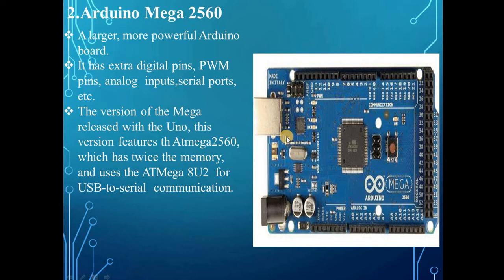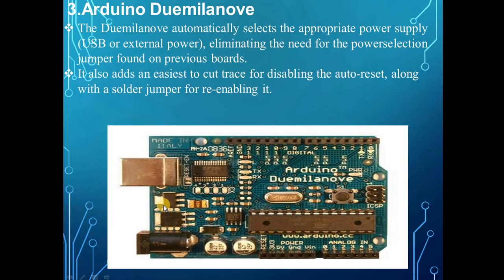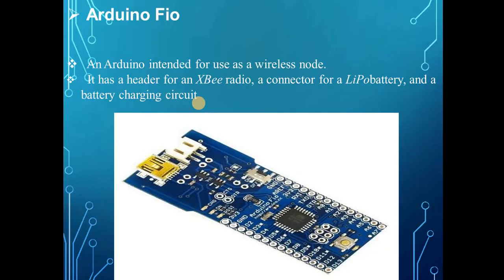The second type is the Arduino Mega 2560. This is a larger, more powerful Arduino board with extra digital pins, PWM pins, analog inputs, and serial ports. It features the ATmega 2560, which has twice the memory and uses the ATmega HU2 for USB-to-serial communication. The third type is the Arduino Duemilanove. The fourth type is the Arduino Fio, intended for use as a wireless node — it has a header for an XBee radio, a connector for a LiPo battery, and a battery charging circuit.